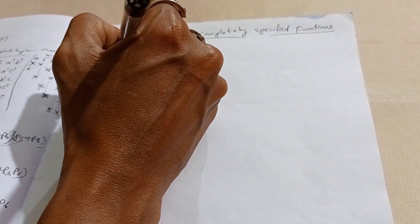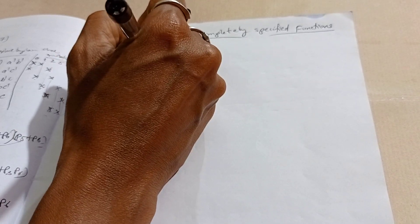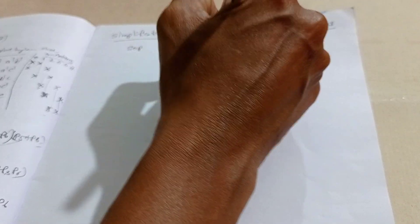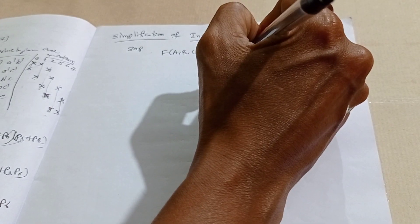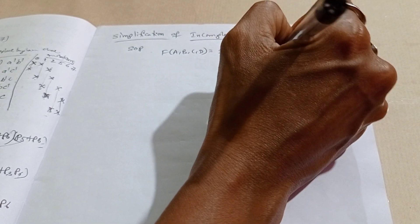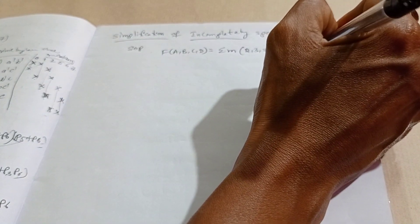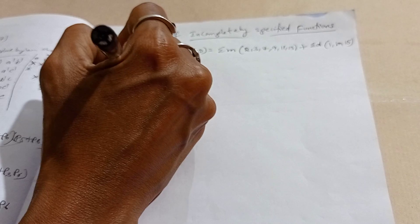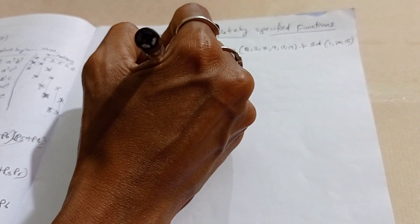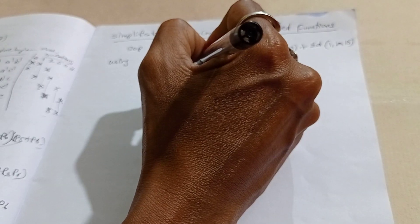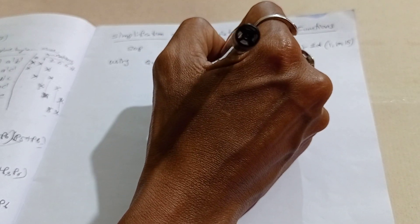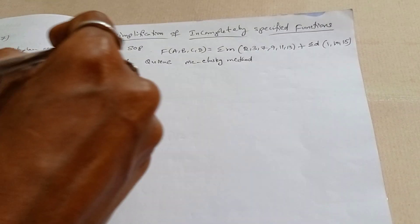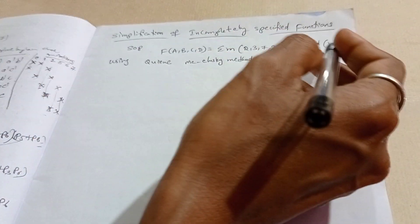Now we will see an example. The SOP is given: F(A,B,C,D) = Σ(2,3,7,9,11,13) + don't care {1,10,15}. We will solve this using the Quine-McCluskey method. The same procedure applies, but we need to also take the don't care terms into consideration.